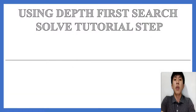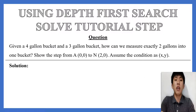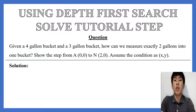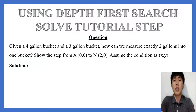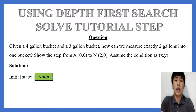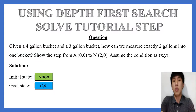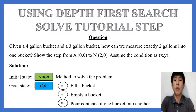Next, we're showing the steps using depth-first search to solve the tutorial problem. The question is: given a 4-gallon bucket and a 3-gallon bucket, how can we measure exactly 2 gallons into 1 bucket? The steps go from A to N, where A is the initial state and N equals the goal state. Assuming the conditions as x and y: x represents the left side and y represents the right side. The initial state is colored green as A=(0,0), and the goal state is colored blue as (2,0). There are 3 methods: Method 1 is fill a bucket, Method 2 is empty a bucket, and Method 3 is pour content from one bucket into another.